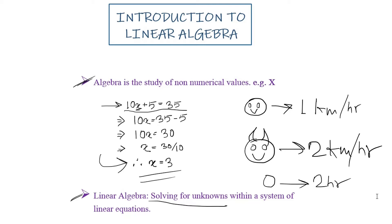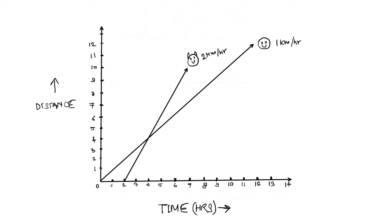This problem may sound a bit confusing to visualize, so let's understand it better with the help of a graph. I have plotted the problem on this graph — this is your progress and this is your friend's progress. Observing your progress first: you started from point zero and after one hour you traveled a distance of around 1 km. Note that this is a handmade graph, so the measurements are not that accurate. After 2 hours you have traveled almost 2 km.